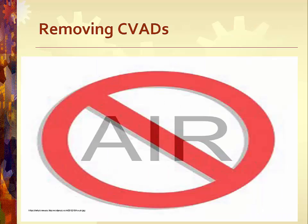Removal of a central venous access device is done according to institutional policy and the RN scope of practice. In many agencies, nurses with demonstrated competencies can remove PICCs and non-tunneled central venous catheters. The procedure involves removing any sutures, then gently withdrawing the catheter while instructing the patient to perform the Valsalva maneuver as the last 5 to 10 cm of the catheter is withdrawn. Pressure should be immediately applied to the site with sterile gauze to prevent air from entering and to control bleeding. Inspect the catheter tip to confirm it is intact, then apply an antiseptic ointment and sterile dressing to the site.